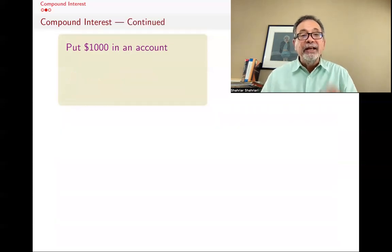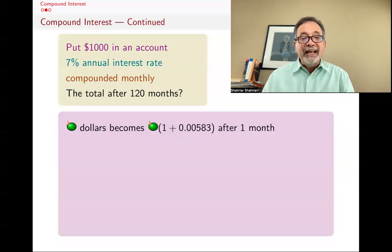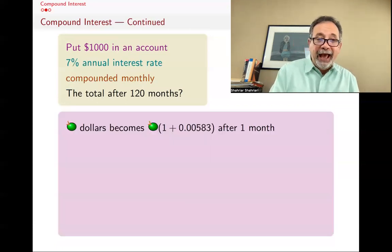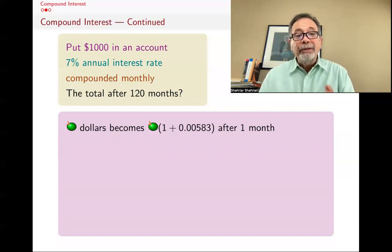Now, keep that in your head. The question is that we have $1,000 in an account, 7% annual interest rate, compounded monthly. What's the total after 120 months? And what we have decided is that if you have A dollars, after one month, it becomes A times 1 plus 0.00583.